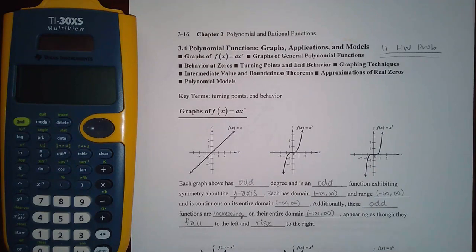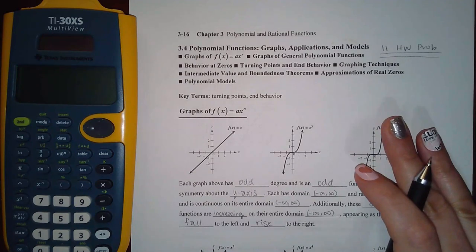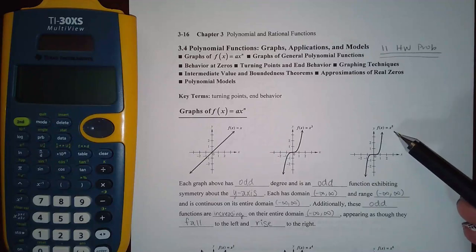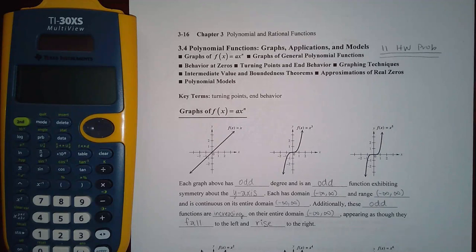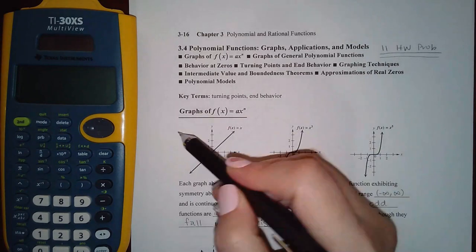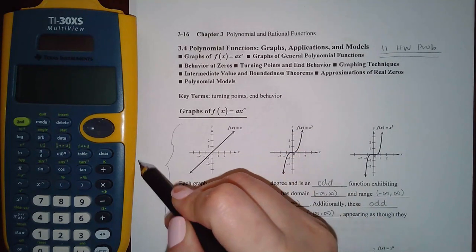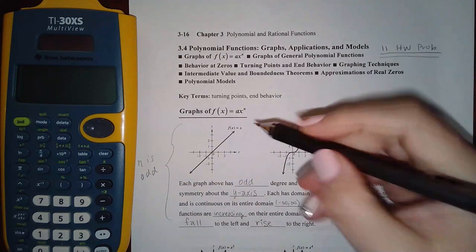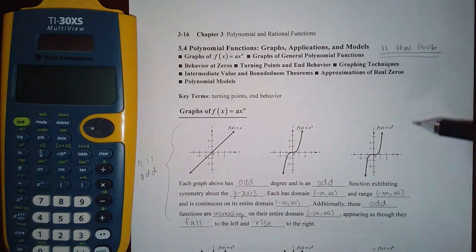So some of the basic things we need to know are, we know about x and we know about x cubed, but now they're throwing in x to the fifth. And the same information applies to x to any odd exponent. So it's graphs of ax to the n and this first set is for when n is odd. So 1, 3, 5, 7, 9, so on and so forth.